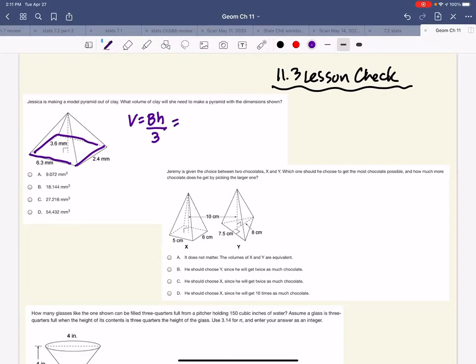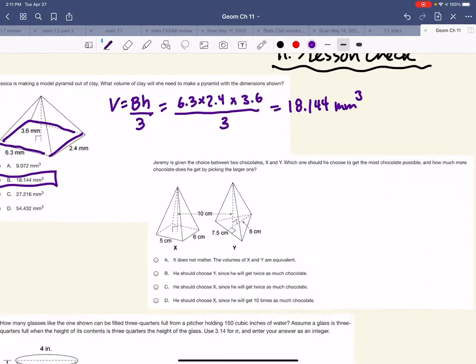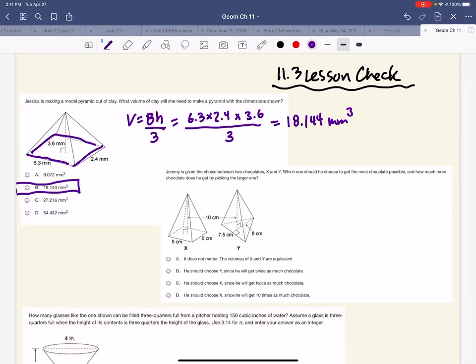So the base is a rectangle, so 6.3 times 2.4, and the height is this 3.6, and we're going to divide by 3, and we get 18,144 millimeters cubed. So that was one of our choices. That's probably the last one that's straightforward. The rest of these have a little bit of a twist. Let's keep going, though.